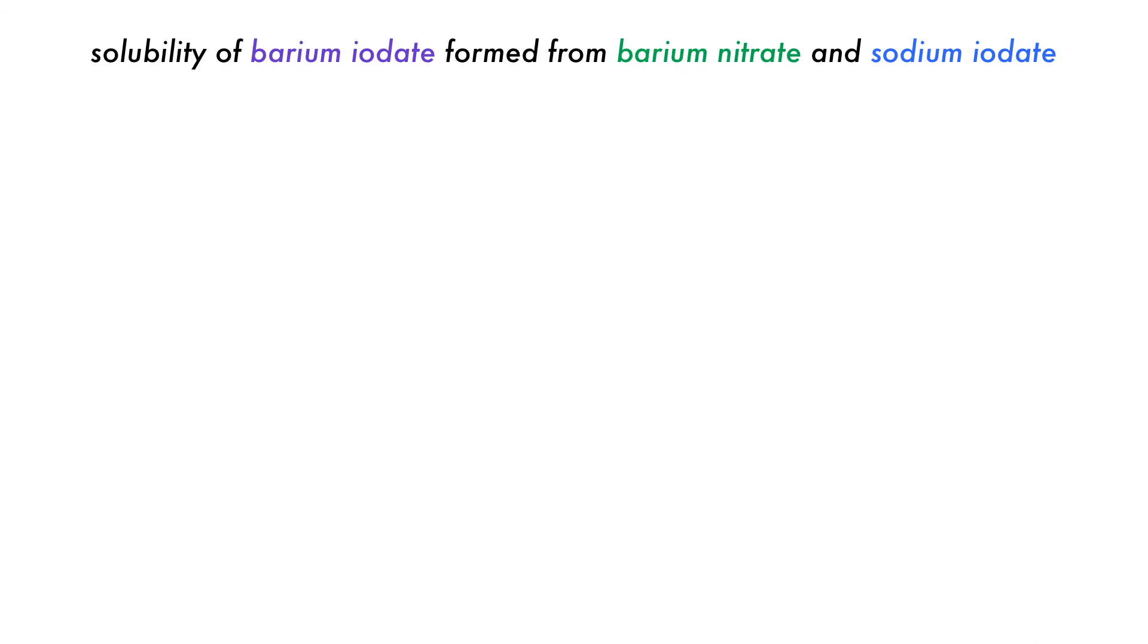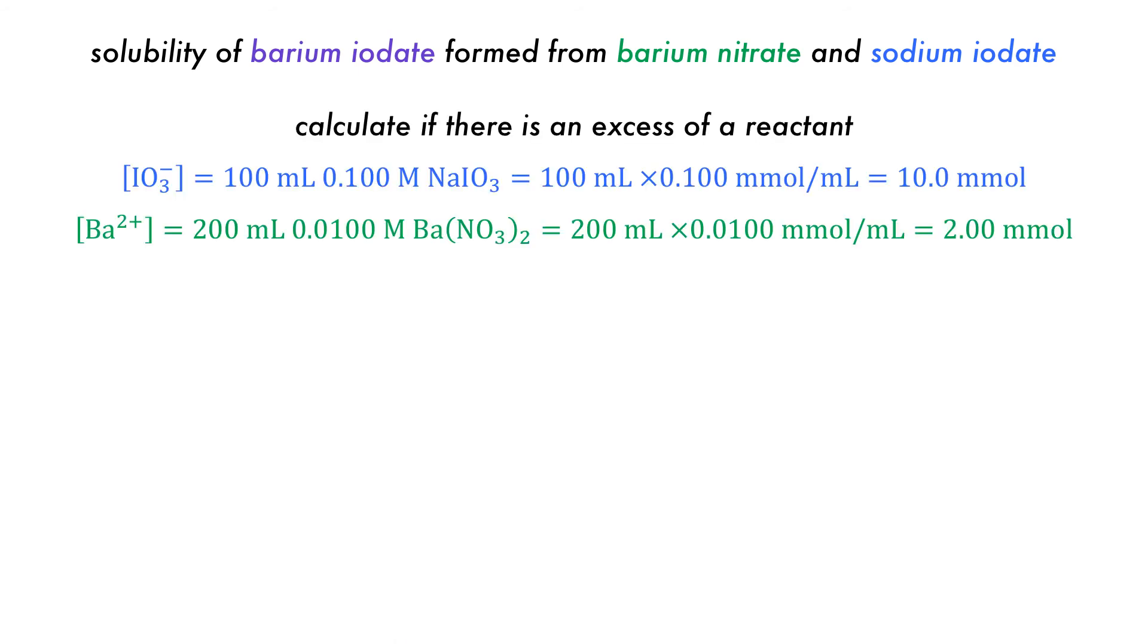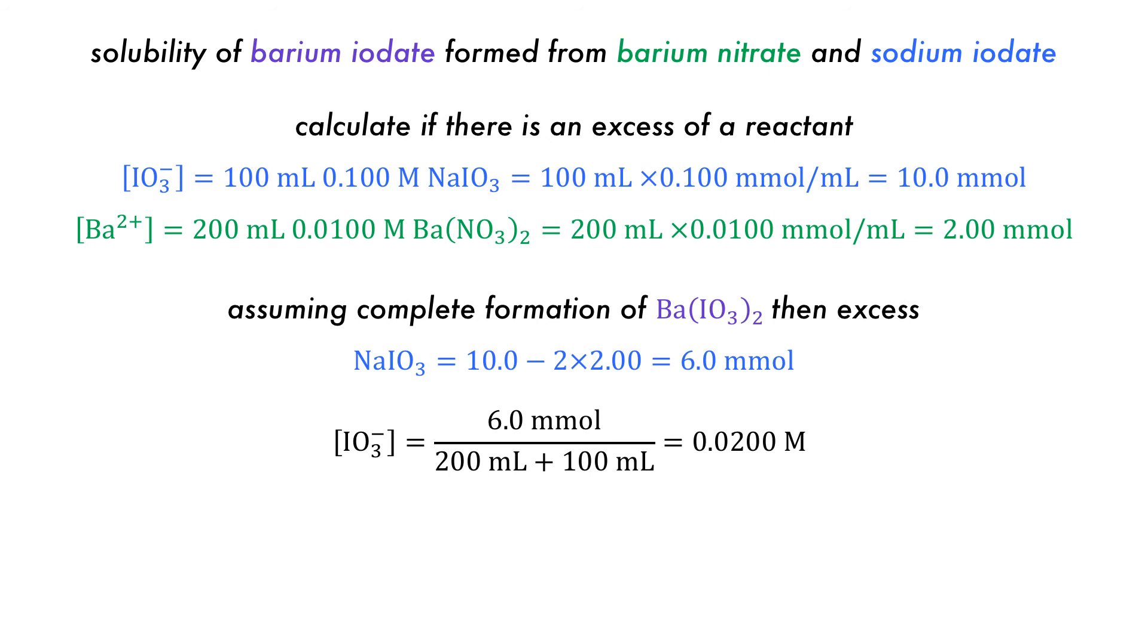How about the case where the salt of concern is formed from the mixing of two different salts, in this case sodium iodate and barium nitrate? The first step is to calculate if there is an excess of either reactant at equilibrium. Assuming complete formation of barium iodate, then the excess sodium iodate will be 6 mmol. The concentration of iodate is then 0.02 mol per liter.